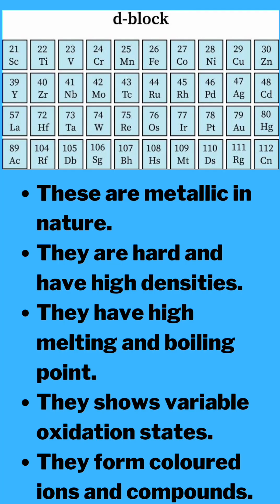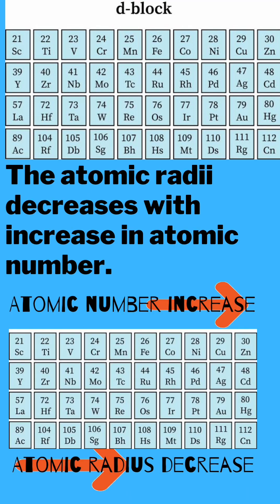The next are the d-block elements. They are metallic, hard, and have high densities. They have high melting and boiling points, variable oxidation states, and they form colored ions or compounds. The atomic radius decreases with increase in atomic number.